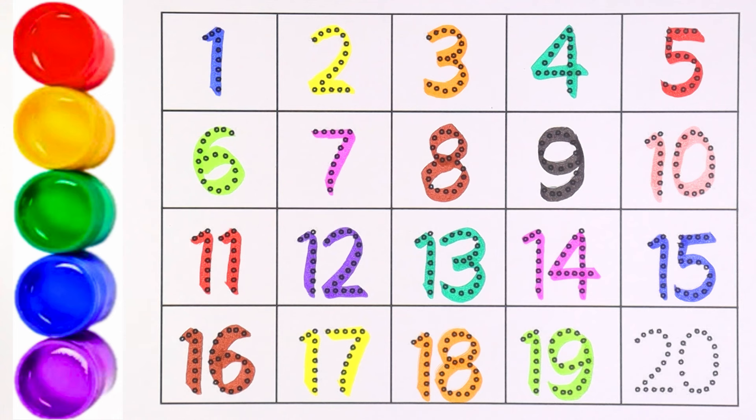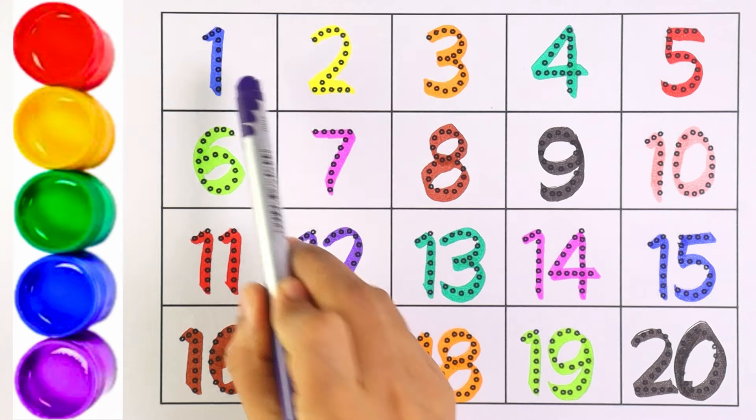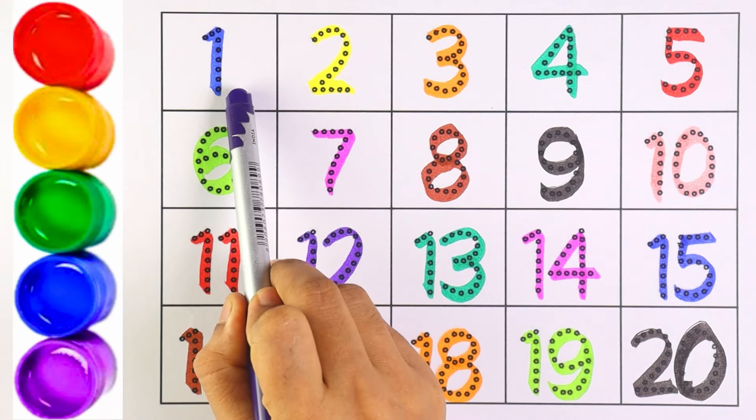The next number is number 20. I am using black color for number 20. 2 and 0 makes the number 20. Now, shall we all count from number 1 to 20? Let's begin.